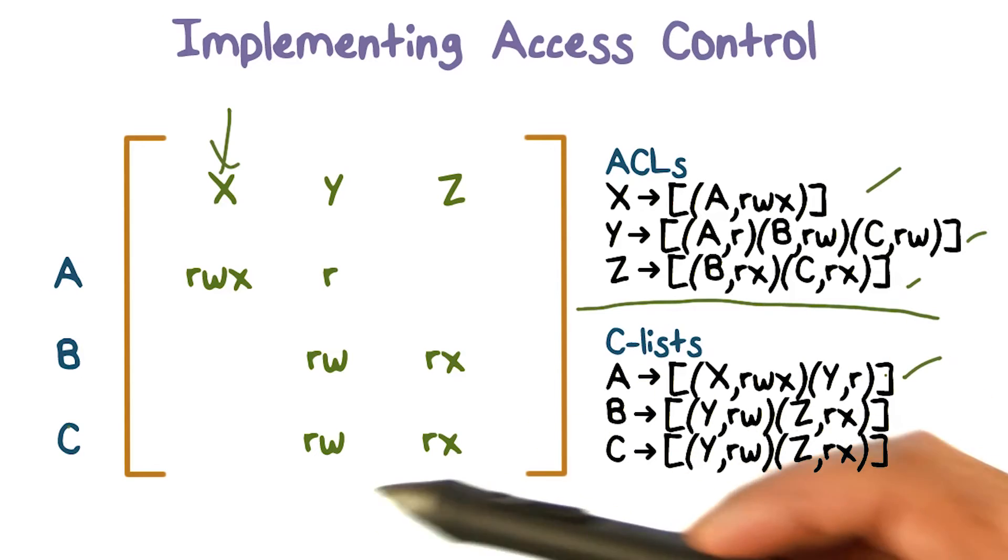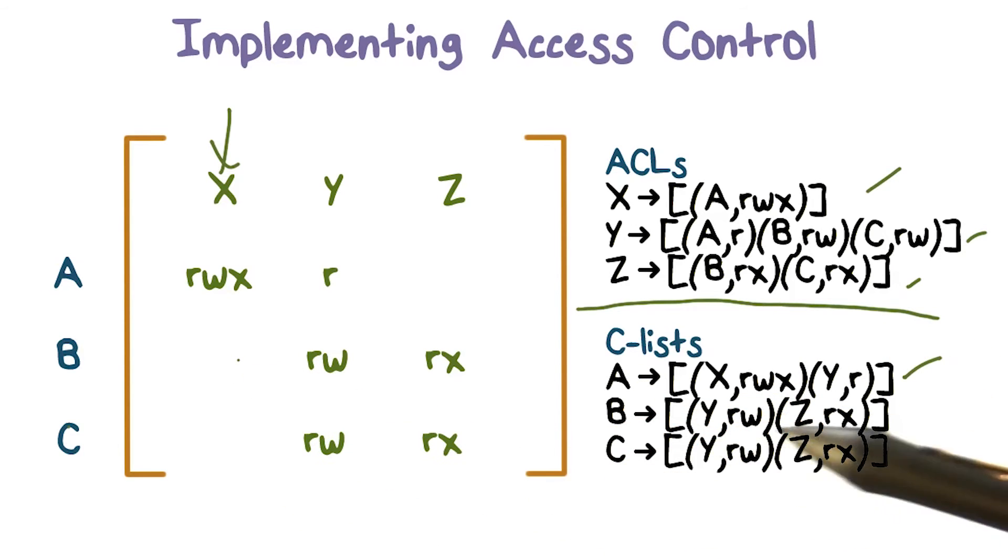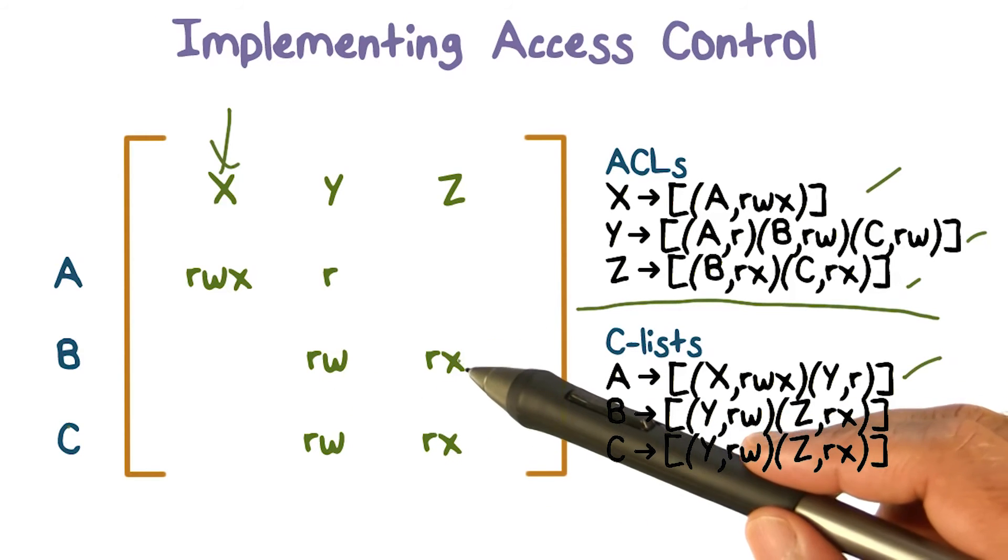Similarly, the C-list for user B has no access for resource X, so nothing for X. But for Y, we're going to have read and write access, and for Z, we're going to have read and execute access. So this C-list will have two entries.